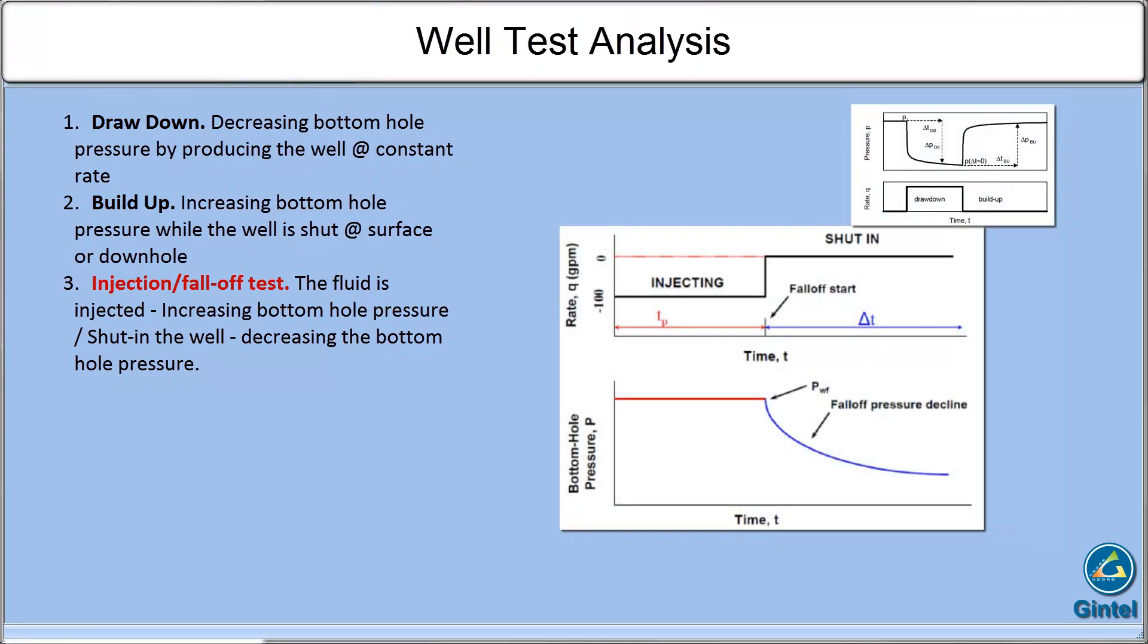There are some specific types of tests. One is injection or fall-off test, used for injection wells. While the fluid is injected, bottomhole pressure increases or becomes constant. Since the wellbore fluid level drops, bottomhole pressure decreases.